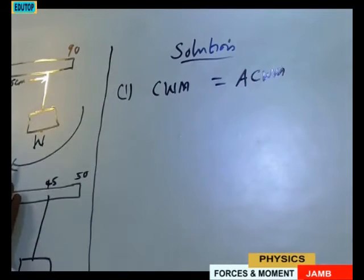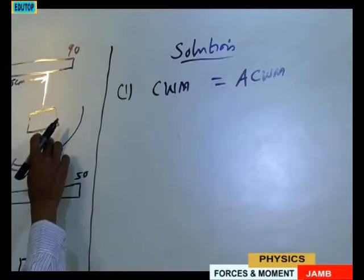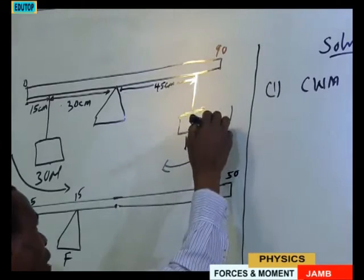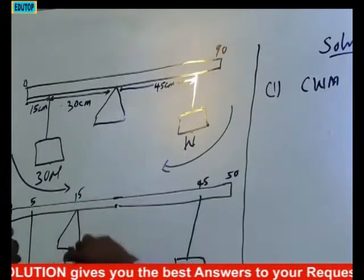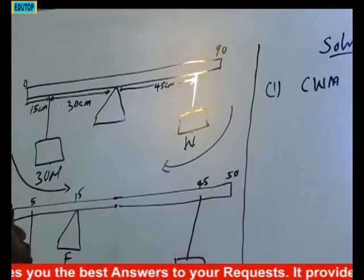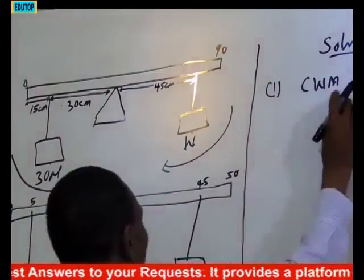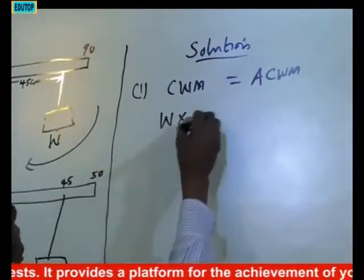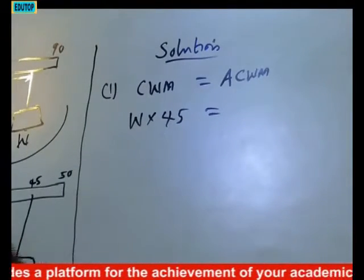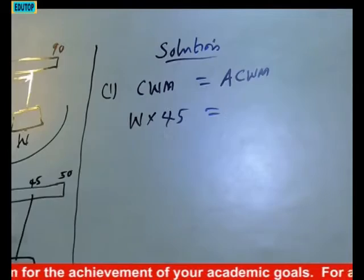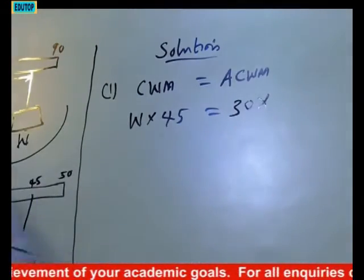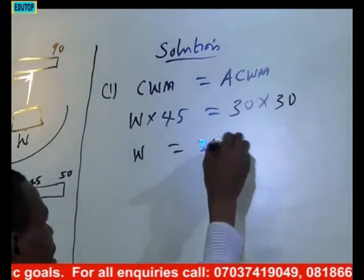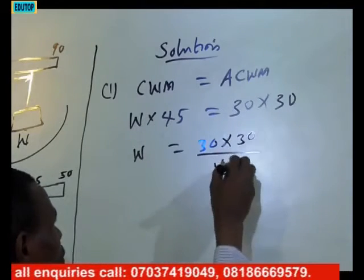For the clockwise moment, we are going to multiply the unknown weight W by 45, because we are taking our moment from where we have the weight or the load to the pivot or the focal. So it is going to be W times 45, which is going to be equal to the anticlockwise moment: 30 times 30. The weight W will be equal to 30 times 30 divided by 45.